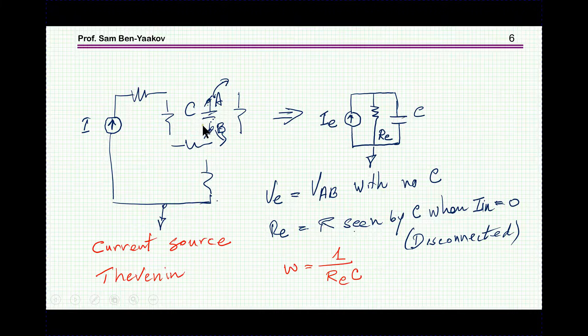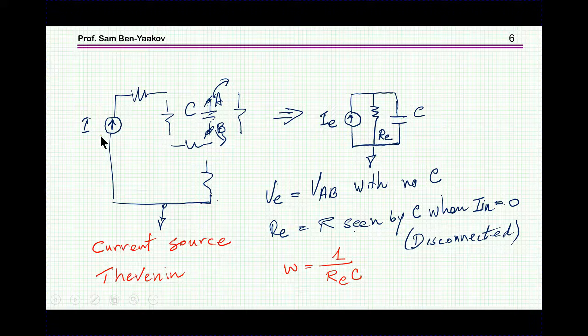Now, you can do the same thing if you have a current source. So you separate this capacitor, you look back, you find out what is the equivalent resistance, and when this is disconnected, or set to zero, being a current source, the same way you find what is the time constant or the location of the pole.